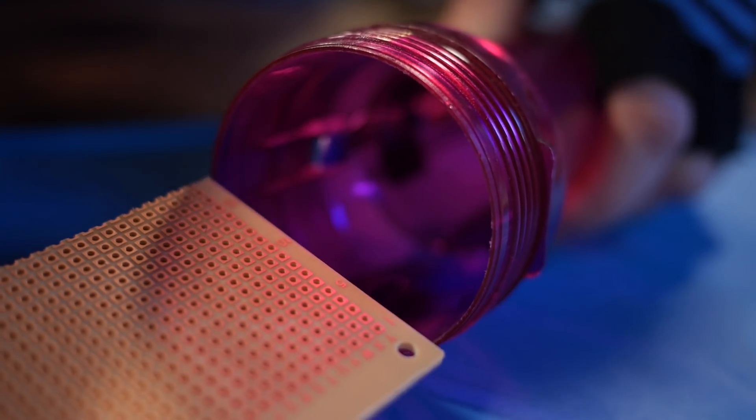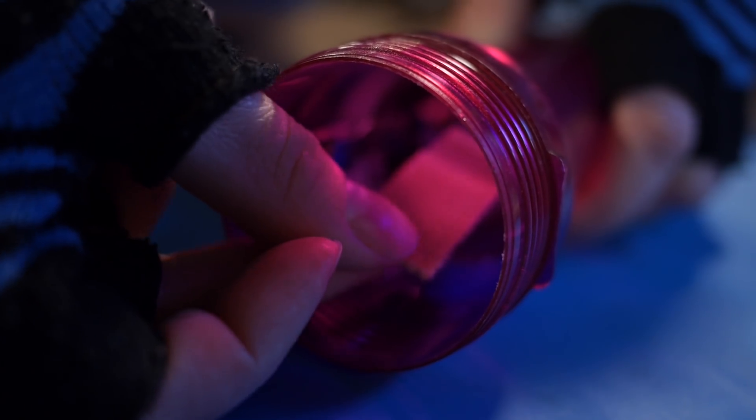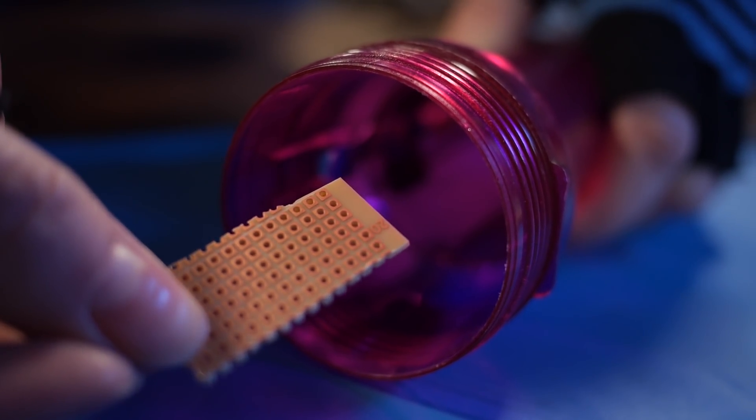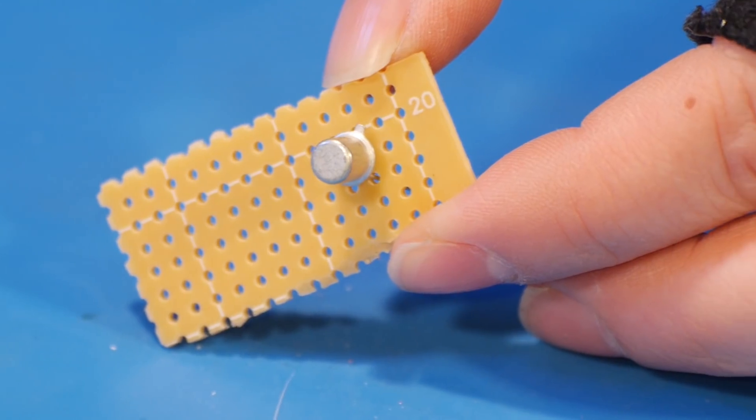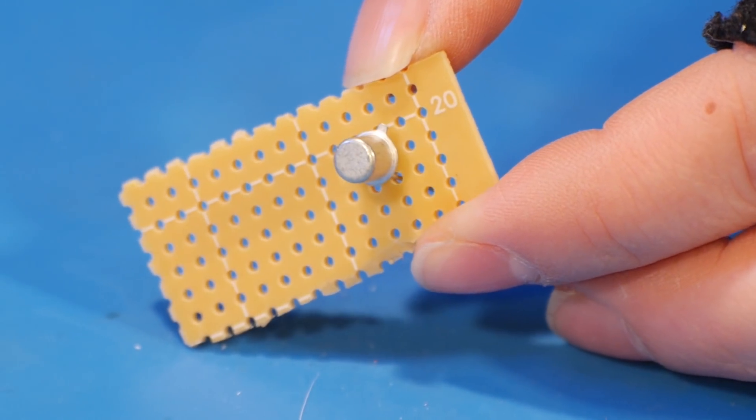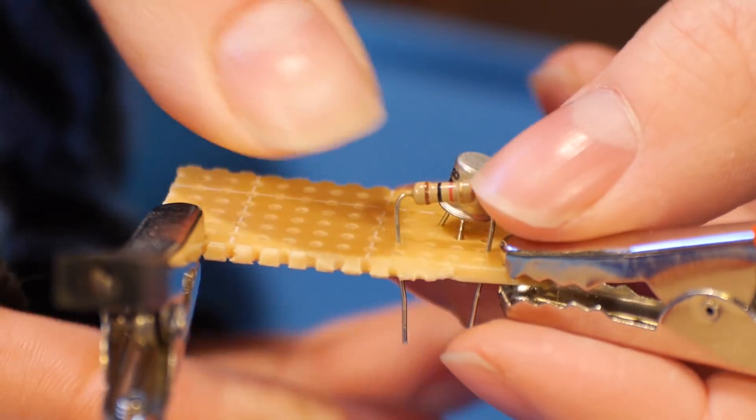For our circuit, we need a piece of perfboard that's at least five by five. It can be longer, but I wouldn't make it much wider because we still want it to fit within our flashlight. We'll start by placing our transistor. Note which side has the tab because that's the emitter pin. Next, we'll place our resistor.